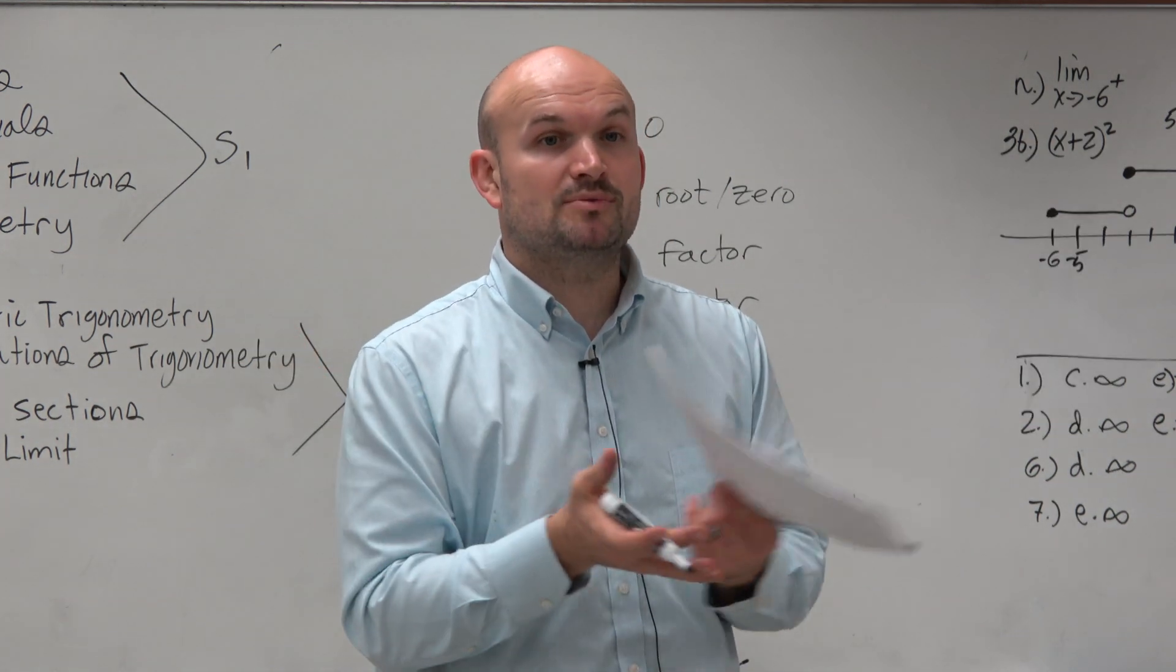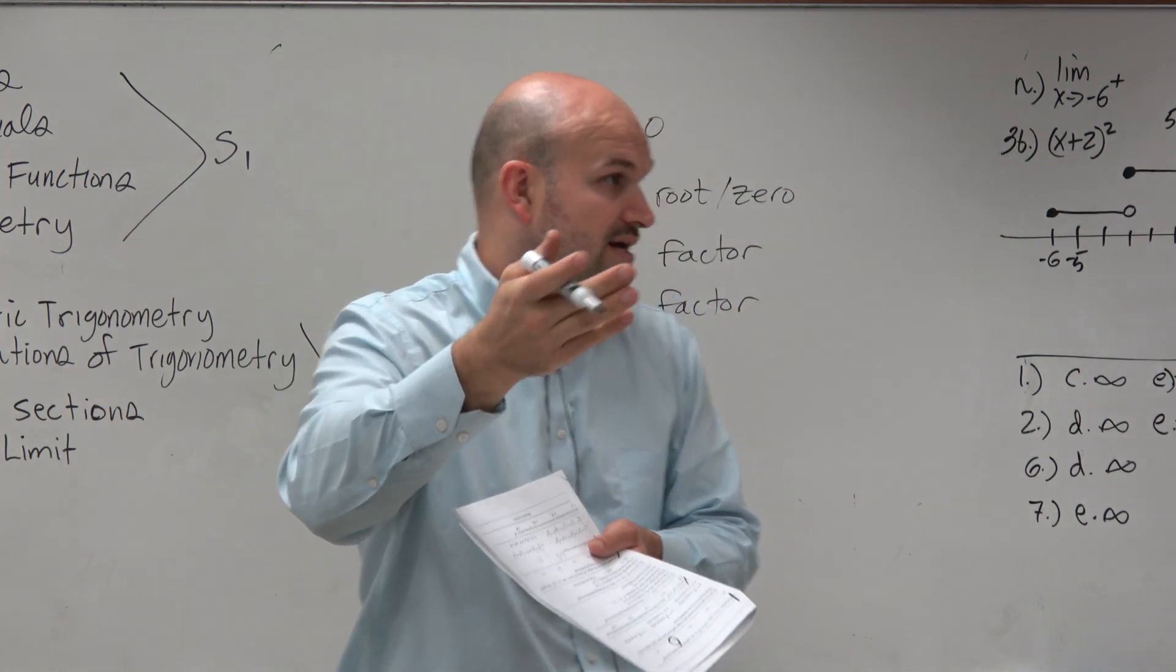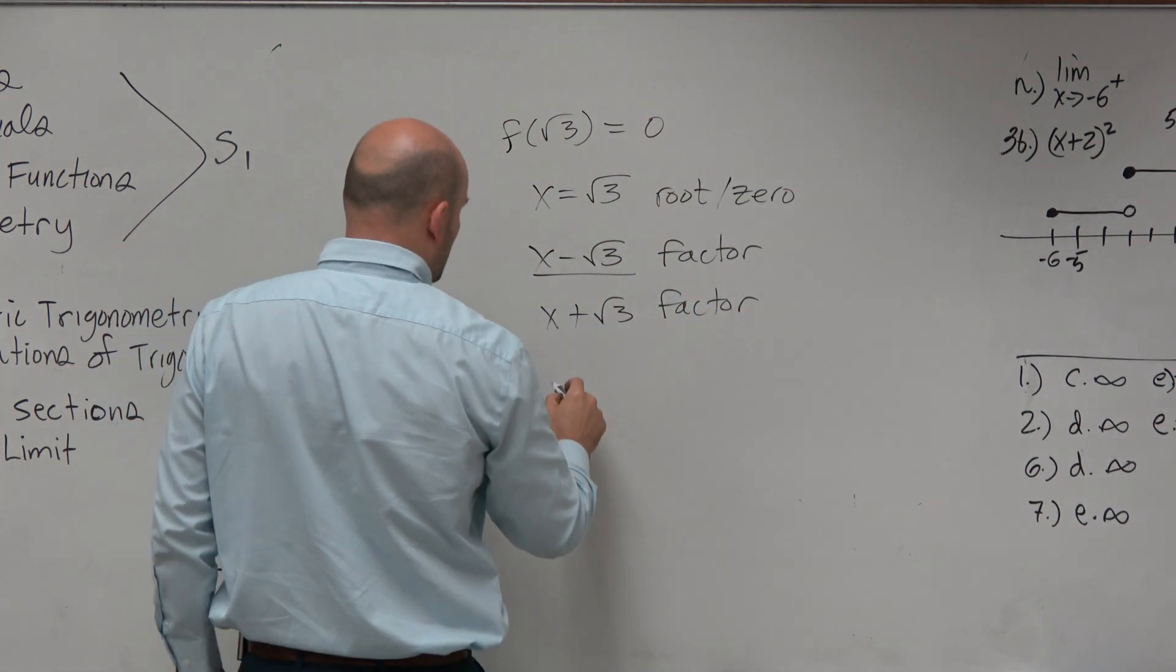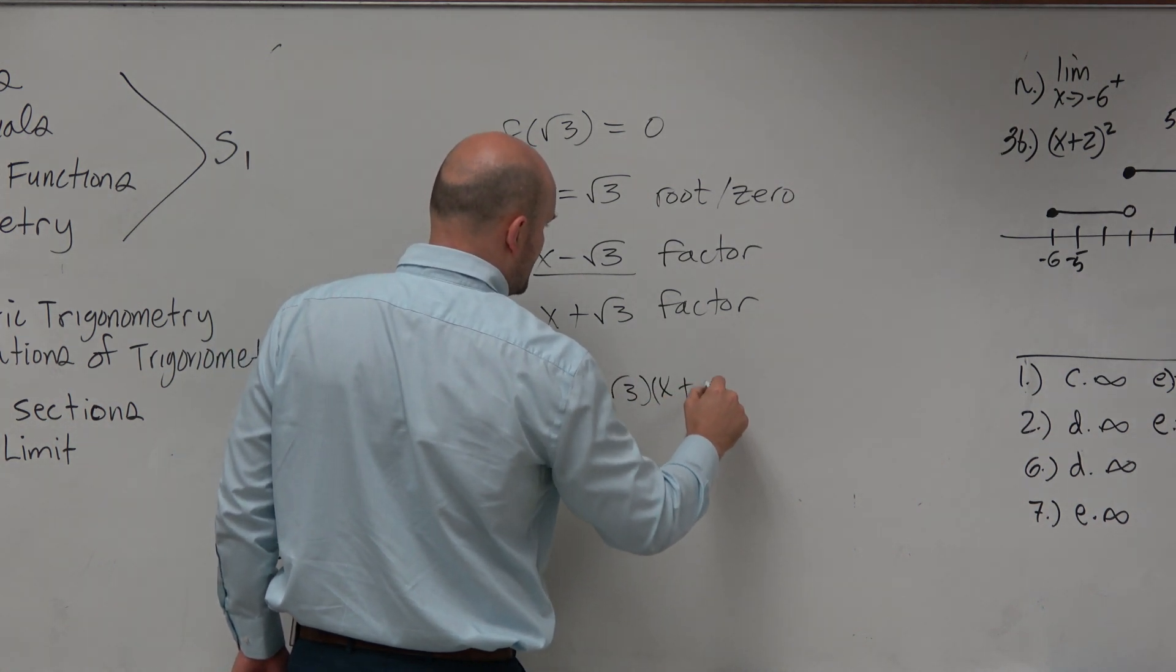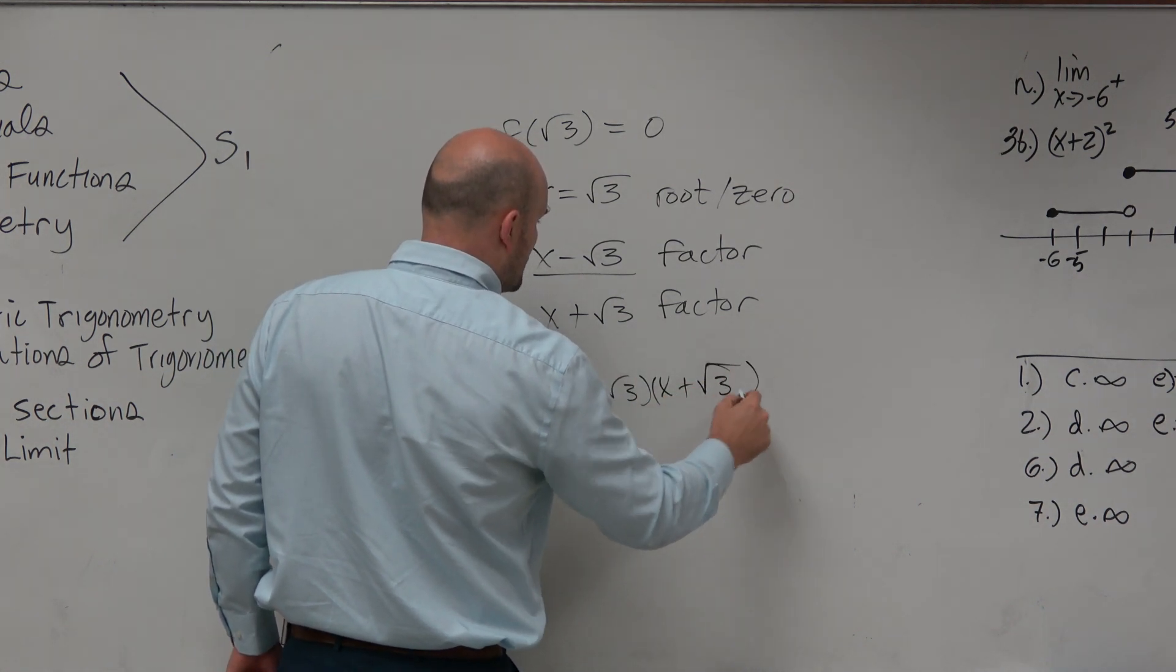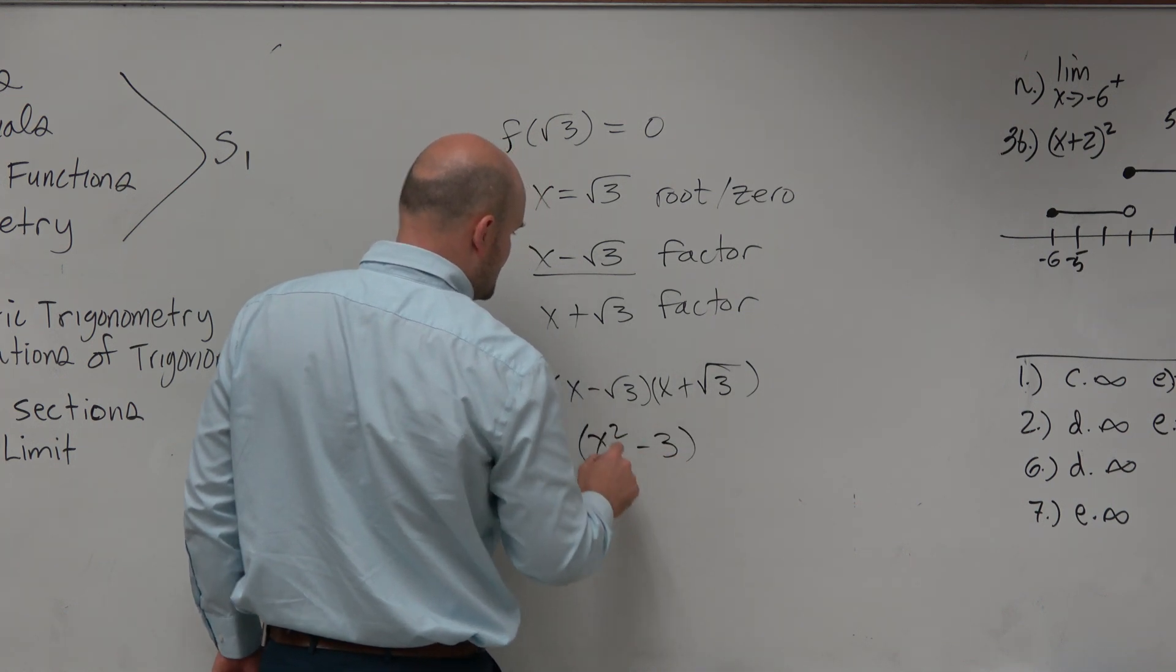And remember, if you multiply two factors, depending on the degree of the polynomial, that could also be a factor of the polynomial. So if we were to multiply x minus square root of 3 times x plus the square root of 3, I'm assuming you guys can do this work in your head, and you would get x squared minus 3.